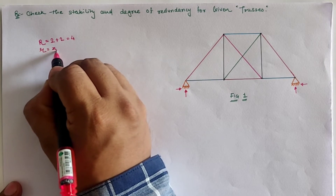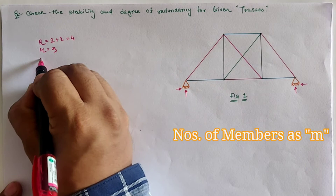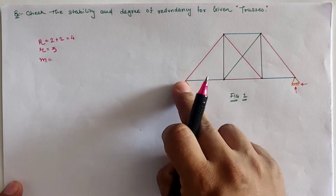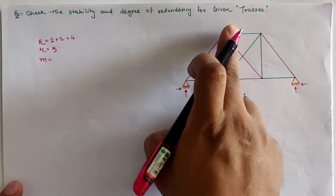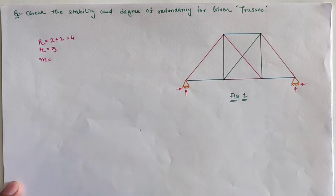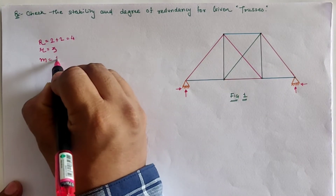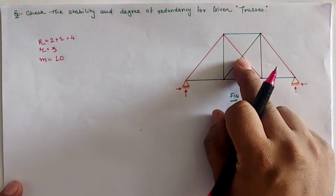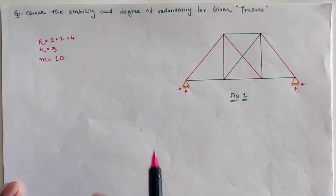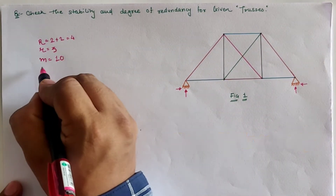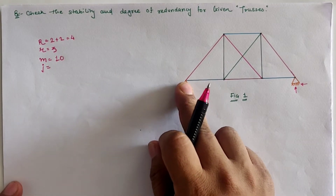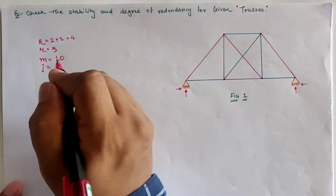The third thing to calculate is the number of members, indicated by small m. Going left to right: 1, 2, 3, 4, 5, 6 at the periphery, 7 and 8 which are vertical, 9 and 10 are cross members — so total number of members is 10. Note: the intermediate point is not considered a joint; we take each wall member individually. The number of joints, indicated by small j, counting left to right: 1, 2, 3, 4, 5, 6 — total joints = 6.